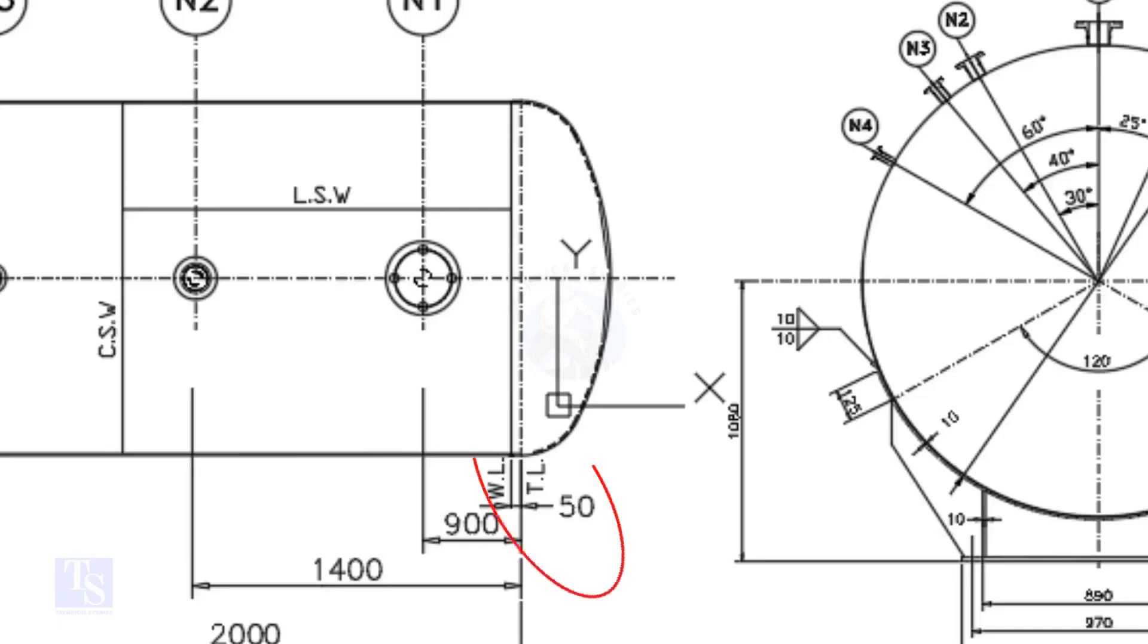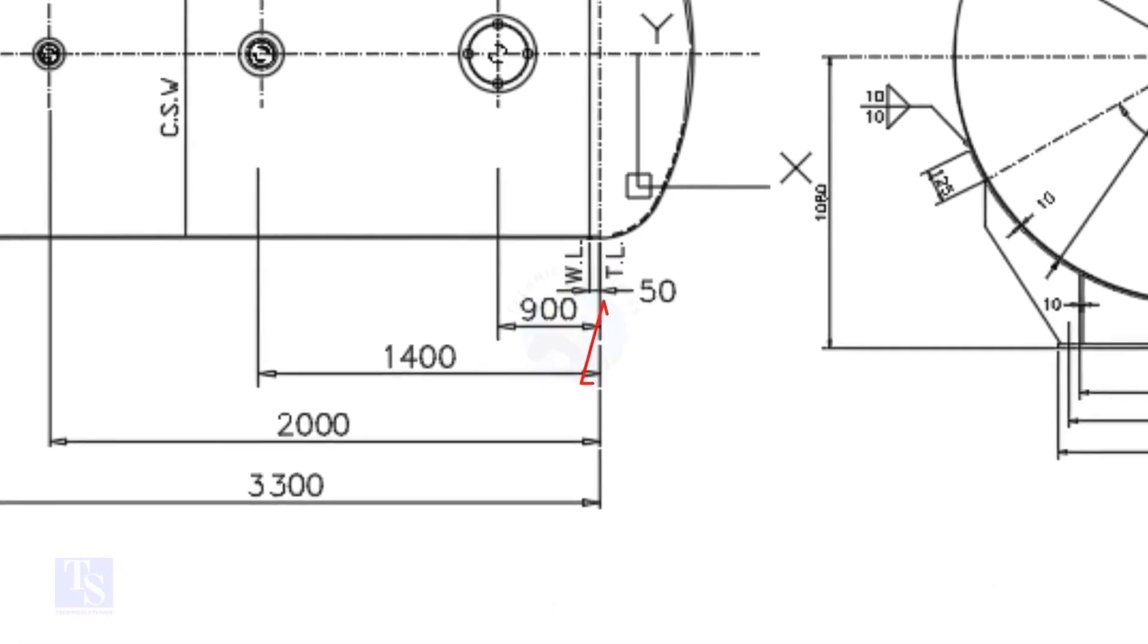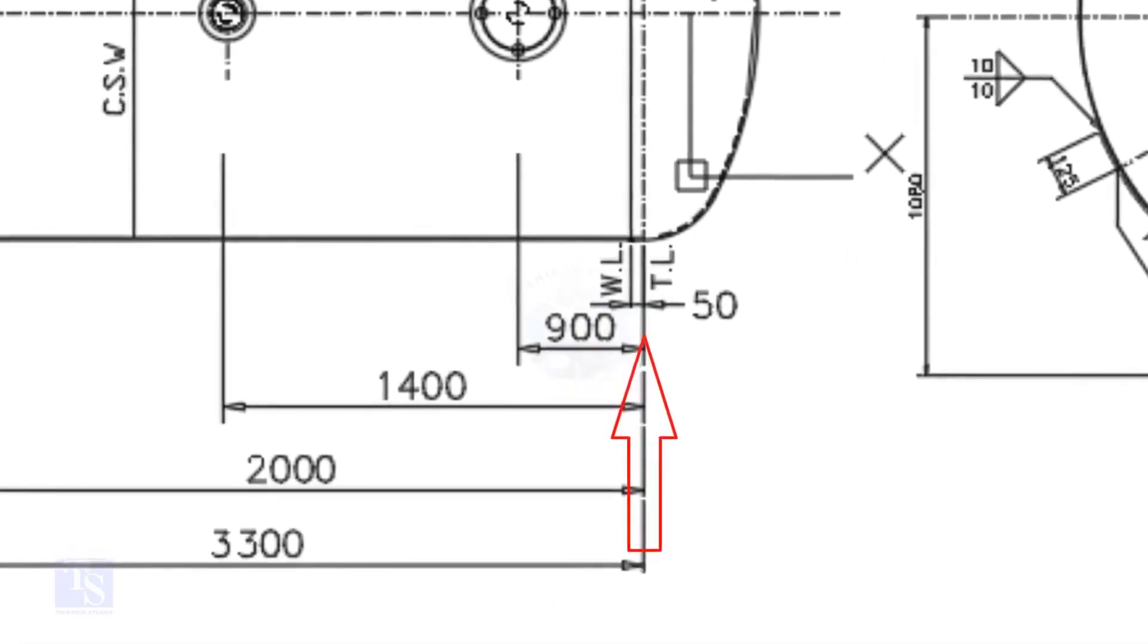The straight face is 50mm. In this drawing, the nozzle center distance is starting from the TL. In some drawings, you may see the nozzle center is given from the WL, so before starting the marking, carefully see these things.